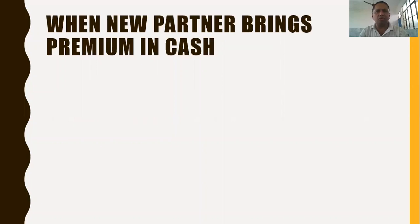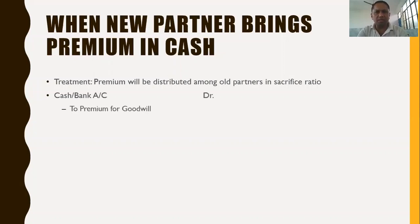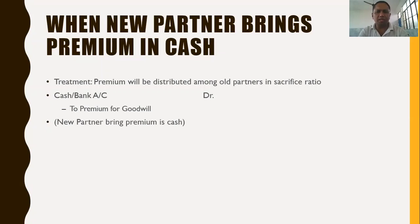The first accounting journal entry when the new partner brings goodwill in cash is: Cash or Bank Account debited to Premium for Goodwill. The narration is: new partner brings premium in cash. The premium will be distributed among old partners in their sacrificing ratio at the time of admission.